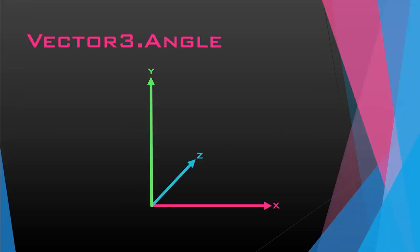The very first function we're going to talk about is Vector3.Angle. What this function will do is give you the angle — an unsigned angle — so it's always going to be positive, between 0 and 180, for the position or the angle from A to B.